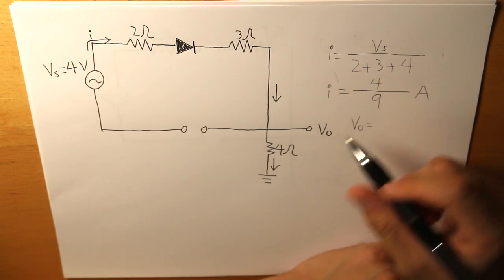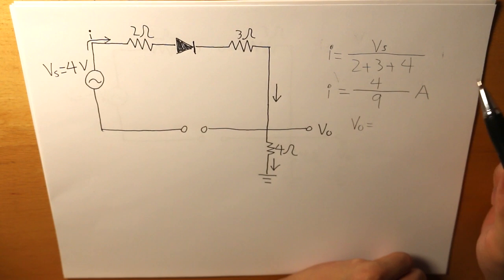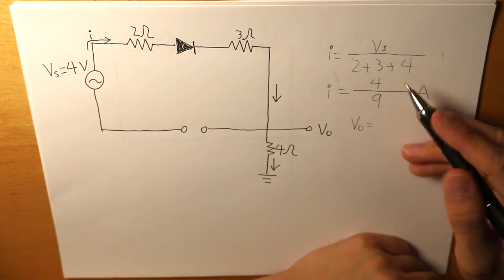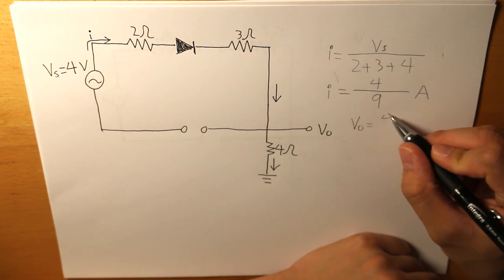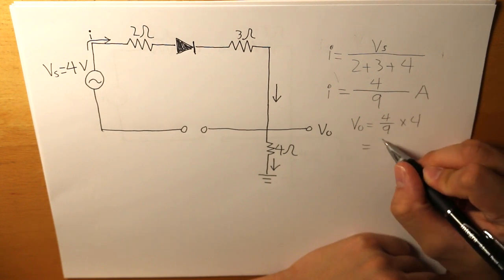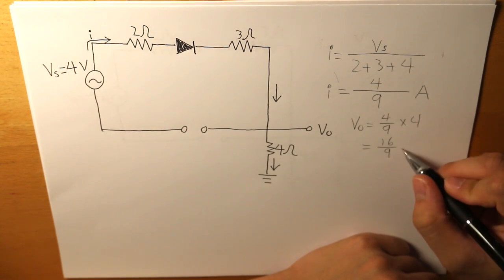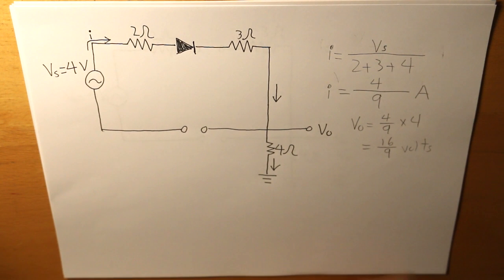Our output voltage is equal to that current that we calculated multiplied by the load, which is 4. So 4 over 9 times 4. And what we get is 16 over 9 volts. And that is our output voltage when our voltage source is equal to 4 volts.